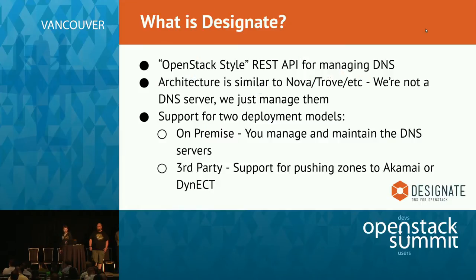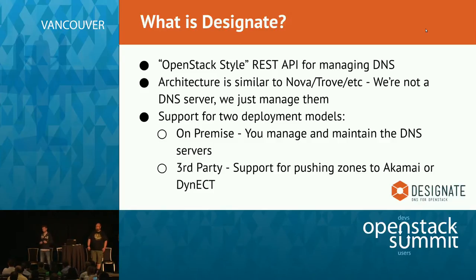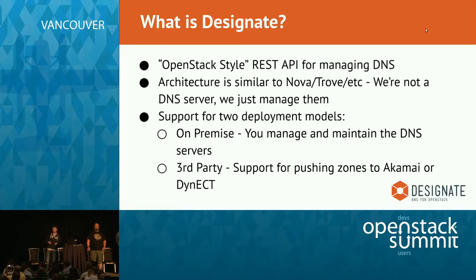What is Designate? Designate is an OpenStack-style REST API for managing DNS. Architecturally, we're very similar to Nova and Trove in that we aren't a DNS server — we instead orchestrate and manage the DNS server. We have two models: on-premise, using Bind or PowerDNS where you run the infrastructure yourself; and third-party, where we integrate with Akamai or Dynect, who run the front-end infrastructure while you manage the control plane.